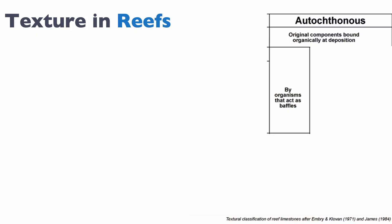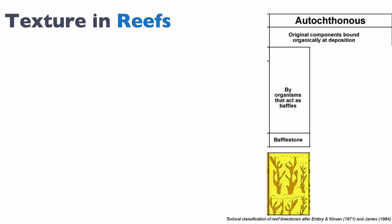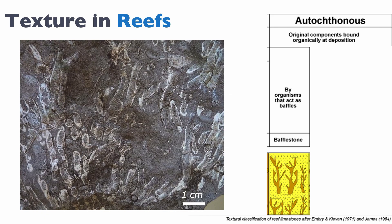Now let's look at another case: if the components are actually bound together at the position of deposition. This is really one of the reasons this classification was invented — to look at reefs. If the organism forms a baffle, a vertical barrier, then we talk about a bafflestone. Here's an example of an ancient bafflestone: a branching coral that forms a baffle.